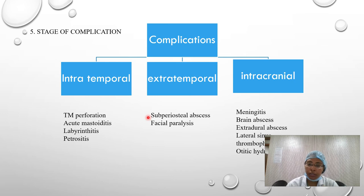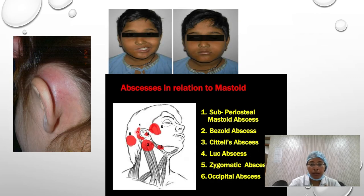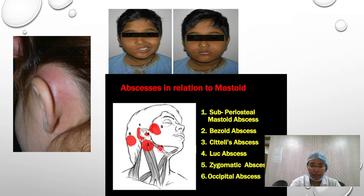The osteitis ultimately spreads into the subperiosteal region, leading to abscess formation. The abscess can occur in several locations: the mastoid region, the upper third of the sternocleidomastoid (Bezold's abscess), the zygomatic region, the temporal region (Luc's abscess), the occipital region, or the submental/submandibular triangle. These are all possible locations of subperiosteal abscess.